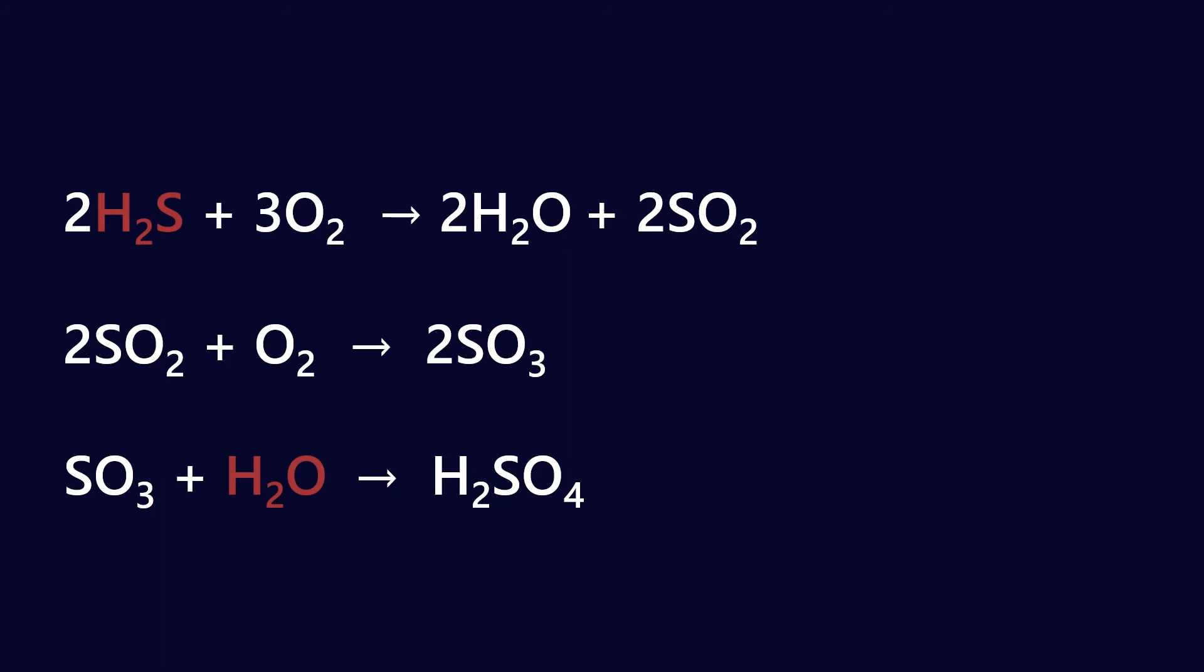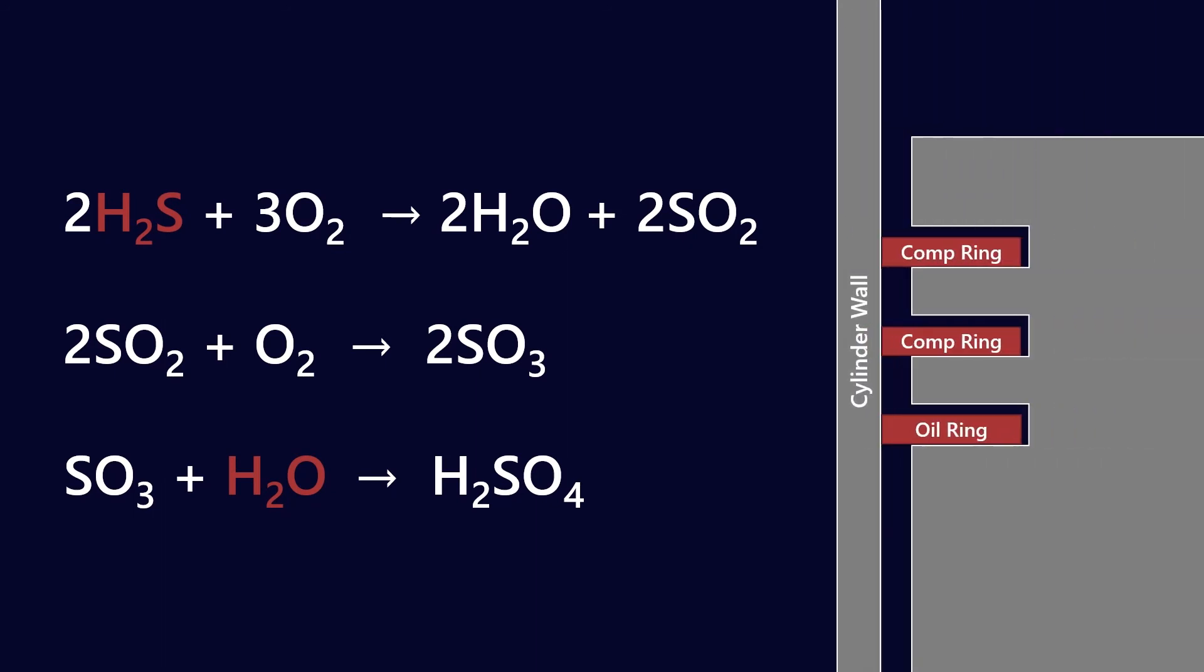So in practice, how does that H2S make its way into the crankcase? Well, if you can imagine the very top landing of the piston, we get combustion above it. And so the gases are going to want to try and get past the compression and oil rings. And that's never a perfect seal, particularly if you have liner scoring or something like that. And so some amount of gas that's been combusted is going to make its way into the crankcase where it will form strong acids.